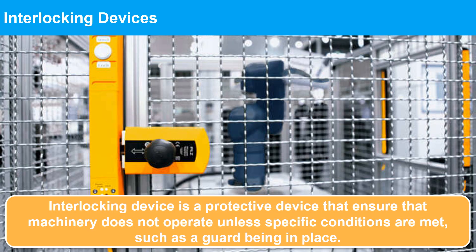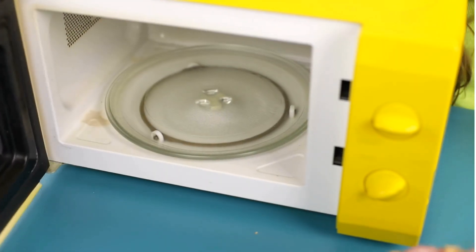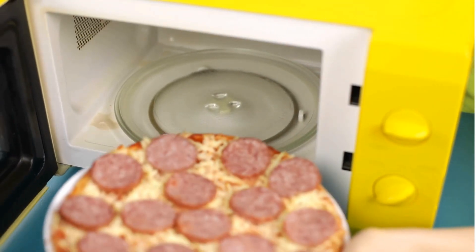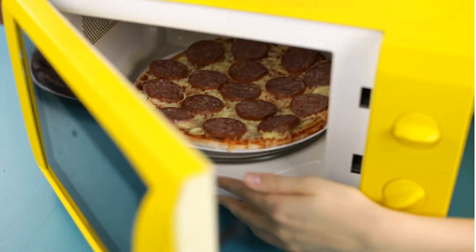Interlocking devices are a protective device that ensures machinery does not operate unless specific conditions are met, such as a guard being in place. They are an important safety measure in machine safety to reduce the risk of accidents and injuries. For example, a microwave oven has a hinged door on the front to allow easy access, which is interlocked so that power to the microwave generator is shut off when it is open.